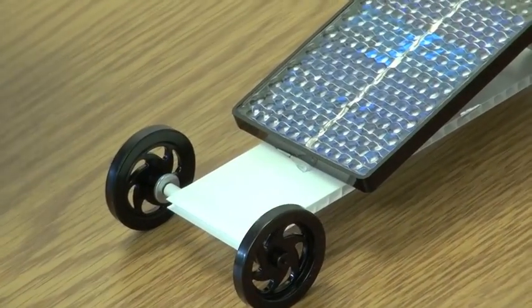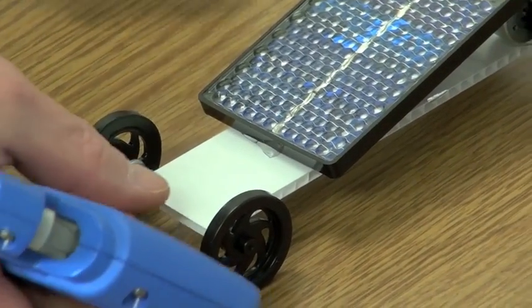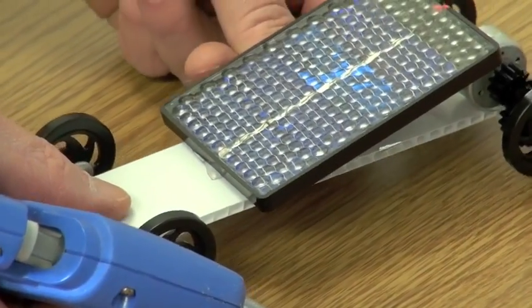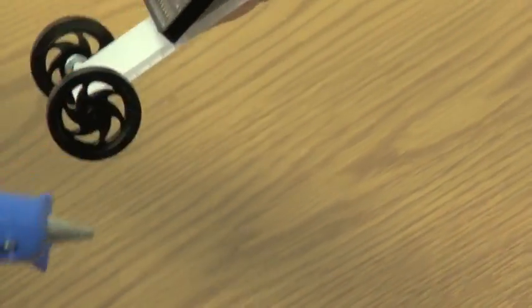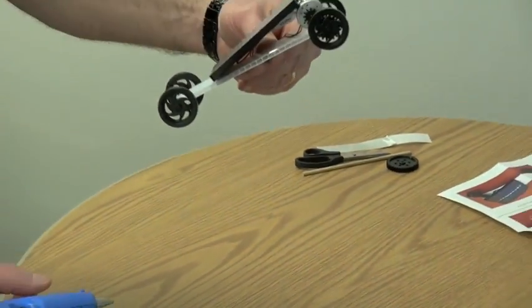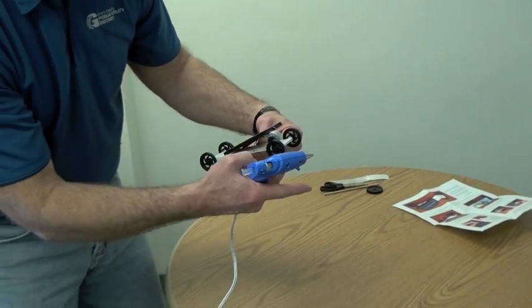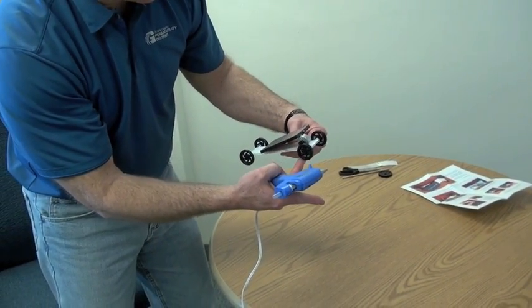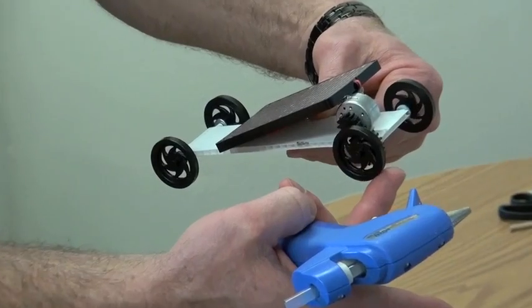And then you have your solar car without the tape, but glued to the panel. Again, you just want to turn the wheels and make sure that your motor gear turns with your axle gear.